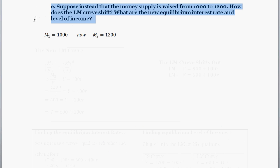So what's this question mean? Suppose that instead the money supply has been raised from $1,000 to $1,200. How does the LM curve shift? So money supply initially, if you look at the early part of the problem, was $1,000. Now the money supply is up to $1,200. So the money supply has increased by $200. So how do we find the new LM curve?